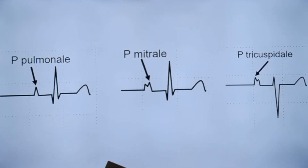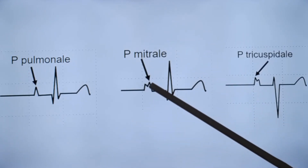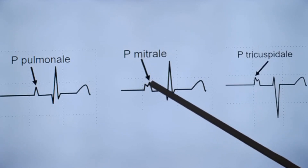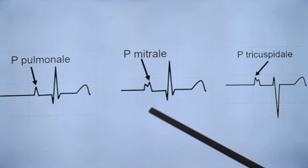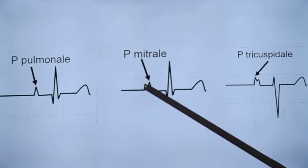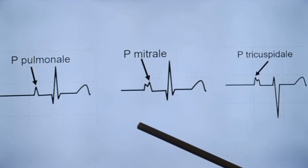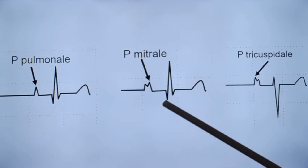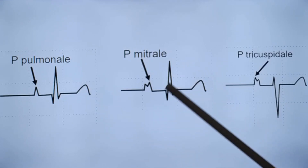If the width of the P wave is more than 2.5 mm, it indicates left atrial enlargement. The height of the second component is also greater in P mitral, because delayed activation is occurring in the left atrium — first the right atrium gets activated, and then the left atrium gets activated.